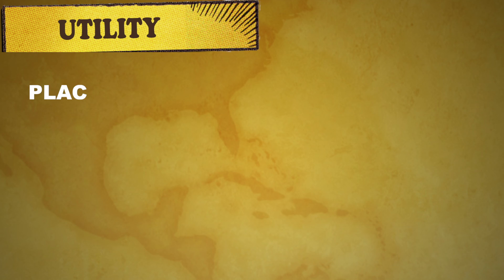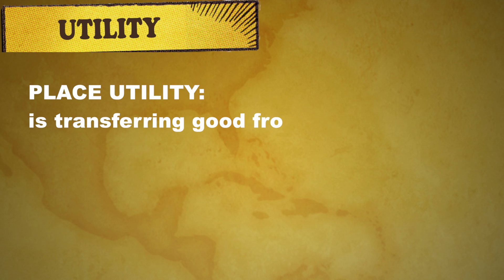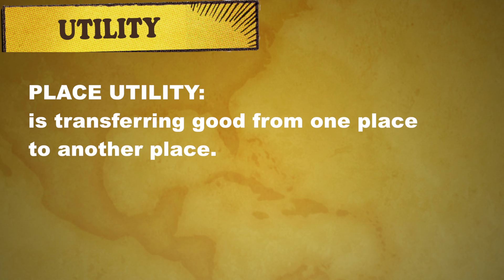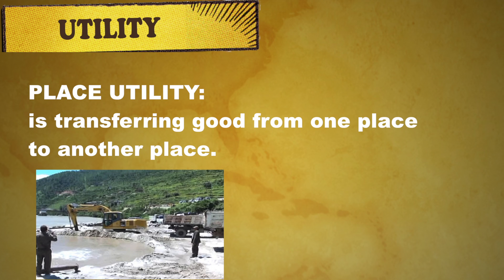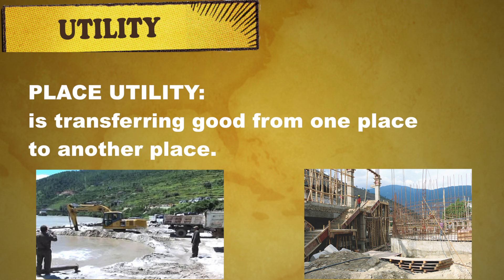Next we have place utility. Place utility is transferring goods from one place to another. For example, transferring goods from factory to retail shops. Another example can be sand which is in the river bank — if it is being taken to a construction site, it gives more utility. There are so many examples you can think about.